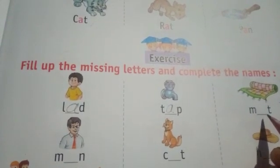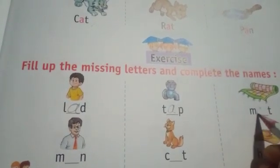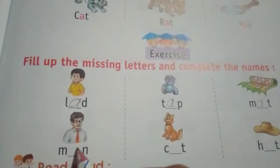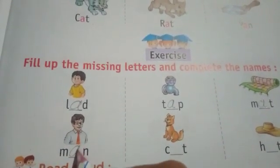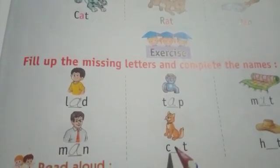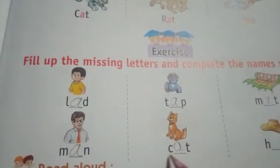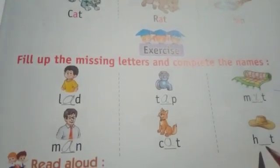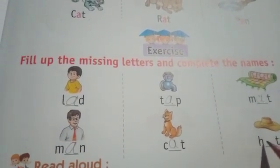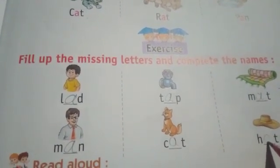M-T is given, what do we fill? A — M-A-T, mat. M-N is given, what do we fill here? A — M-A-N, man. C-T is given, what do we fill? A — C-A-T, cat. H-T is given, what do we fill? A — H-A-T, hat.